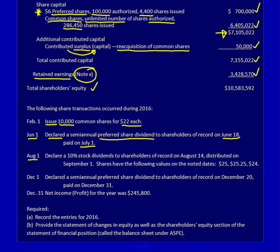On August 1st, I declared a 10% stock dividend to shareholders of record on August 14th, distributed on September 1st. Shares have the following values on the noted dates: $25 on August 1st, $25.25 on August 14th, and $24 on September 1st. These are common shares, so I am declaring a 10% stock dividend to common shares.